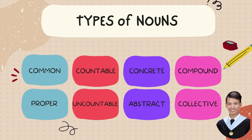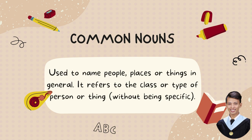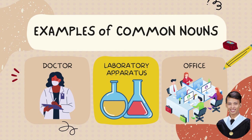Let's look at what each type of noun is with examples. The first one is common nouns. Common nouns are used to name people, places, or things in general. It refers to the class or type of person or thing without being specific. Examples of common nouns are doctor, laboratory apparatus, and office — these are general names, not specific ones.